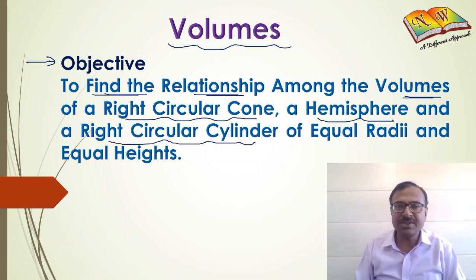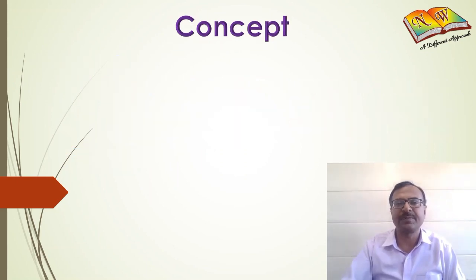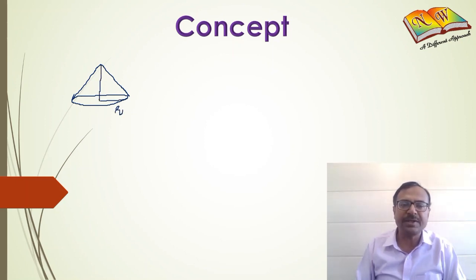The condition is that the three figures should have equal radii and equal heights. Let's understand this concept first. If you have a cone drawn like this, in which there is a particular radius of the base and there is a particular height—the vertical height—if we draw another shape with the same base of equal radius, that is, r is exactly the same as before...